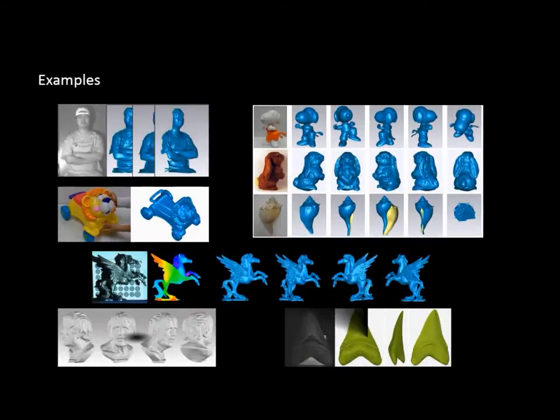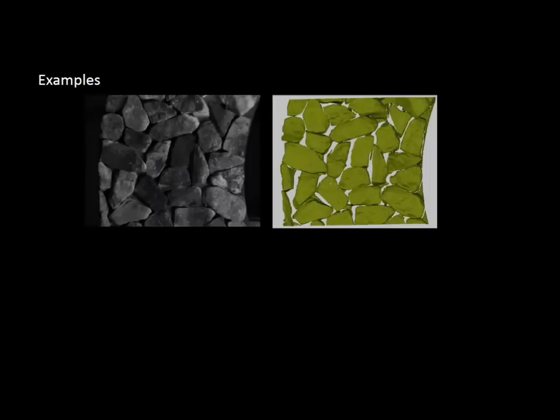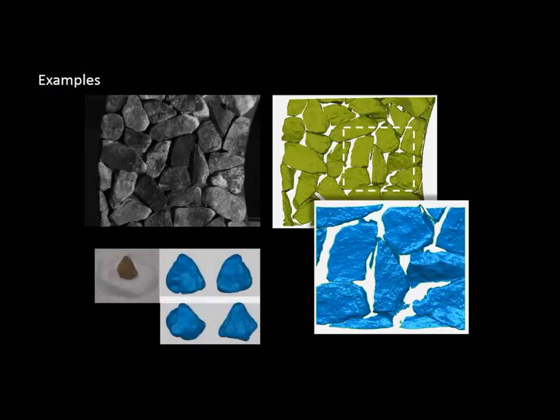If the objects display diffuse reflection or Lambertian-like reflection, the technique works well. Here are some examples. However, if the objects are shiny or specular, there can be a problem.